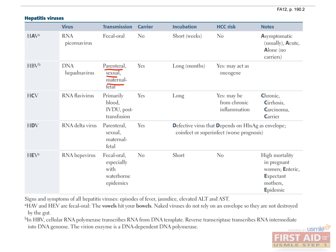Hepatitis D virus is a defective virus that requires hepatitis B surface antigen in order to infect. Transmission of HDV can occur via simultaneous infection with hepatitis B virus, known as co-infection, or via superinfection, which is when hepatitis D virus infects an individual who was previously infected with hepatitis B.